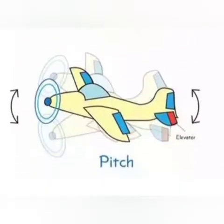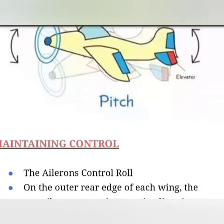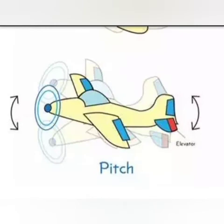Pitch means moving up and down — the aircraft pitches up and down. It is done by the elevator section of the tail. The horizontal stabilizer is the horizontal section of the tail of the aircraft. The elevator is located at the edge of the horizontal stabilizer. When the left and right elevator moves downward, it creates upward pitch. When the left and right elevator moves upward, it creates downward pitch — the aircraft nose moves down, and the aircraft nose moves up — as shown in the diagram.